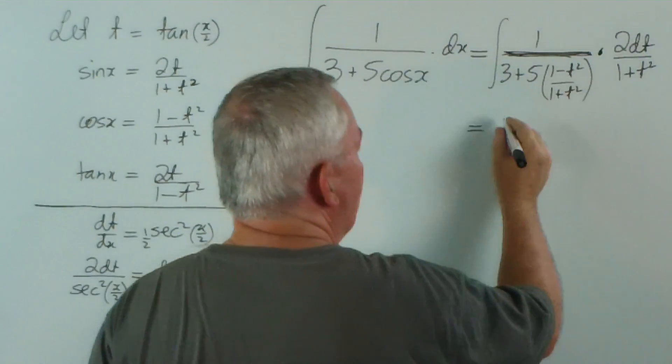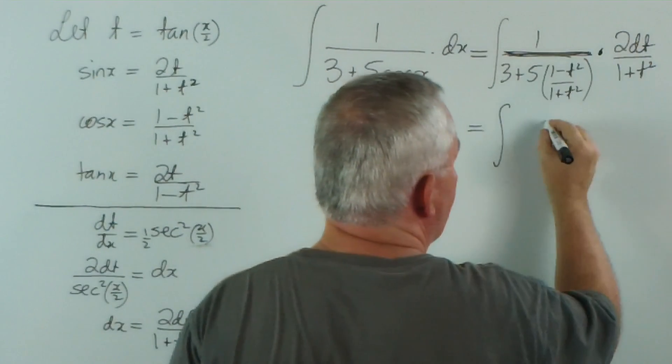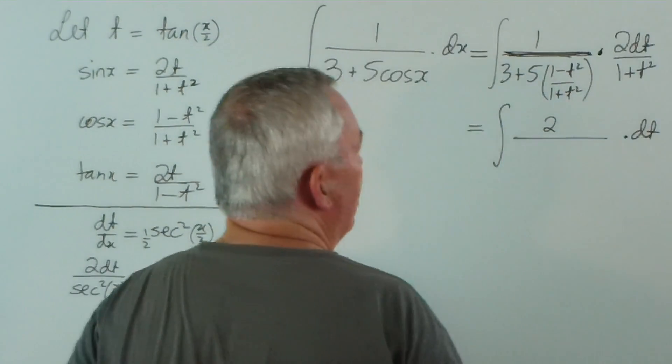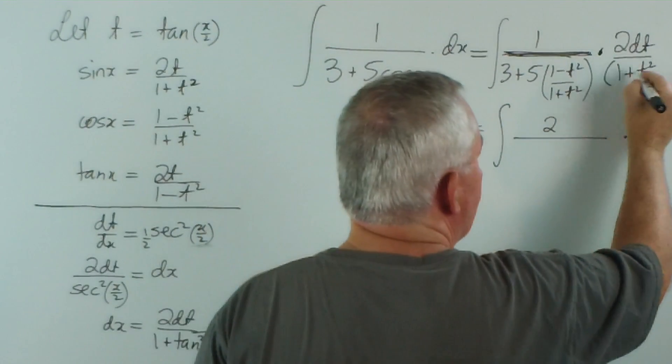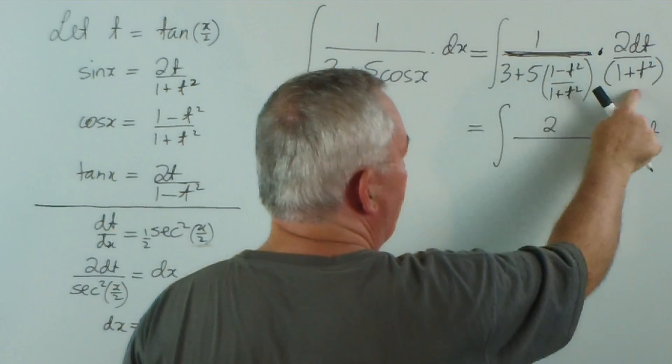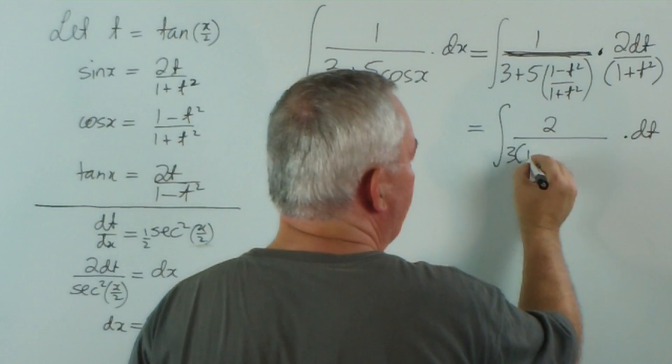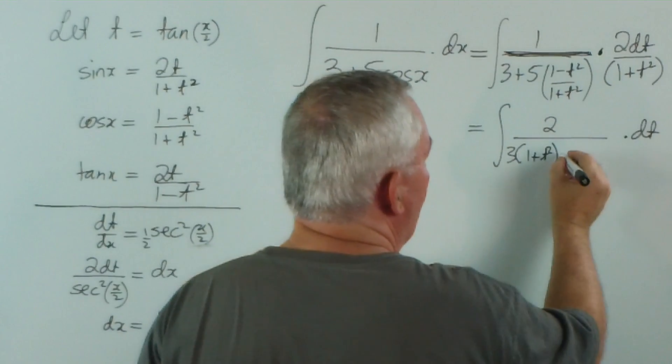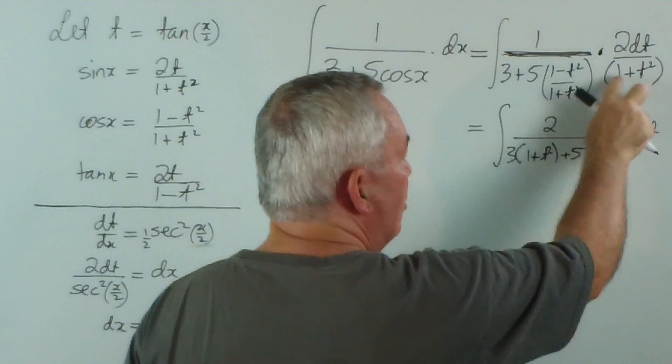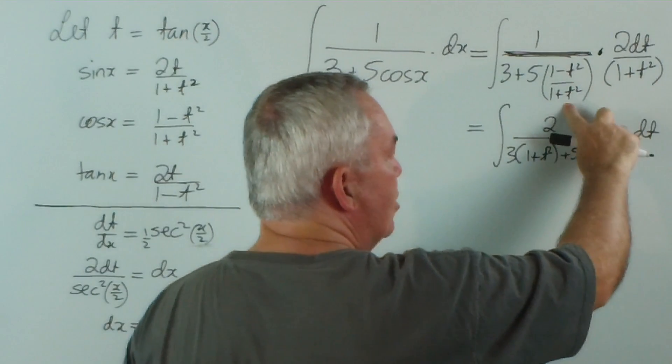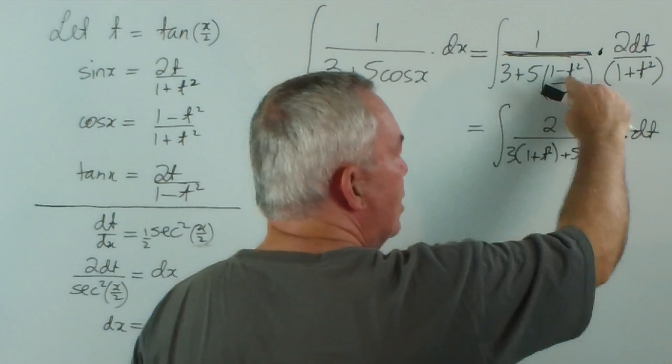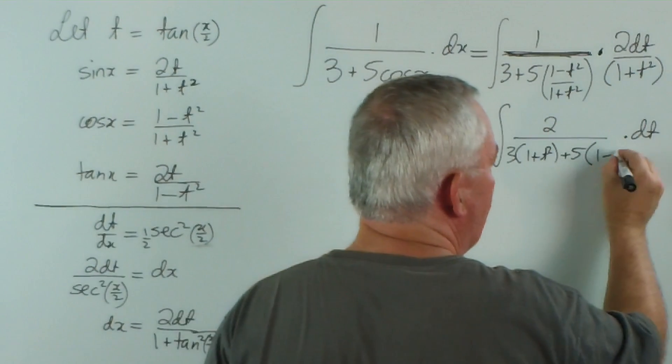Now, the top is quite simple. We have 1 times 2, which is just 2 dt. But here we have this expression multiplying both parts of this expression. So we have 3 lots of (1 + t²) and 5 lots of... Now, when I multiply these, this denominator and that factor there divide out. They're the same, so I just get left with (1 - t²).